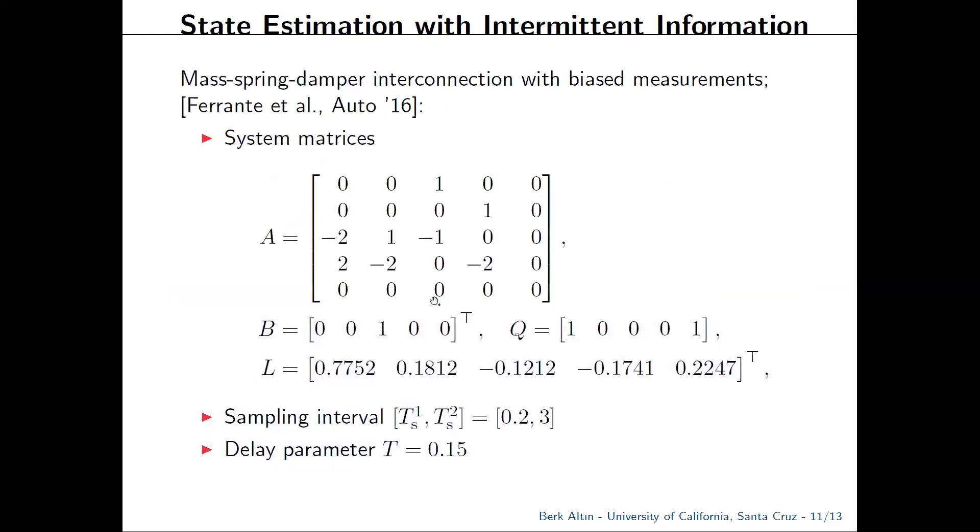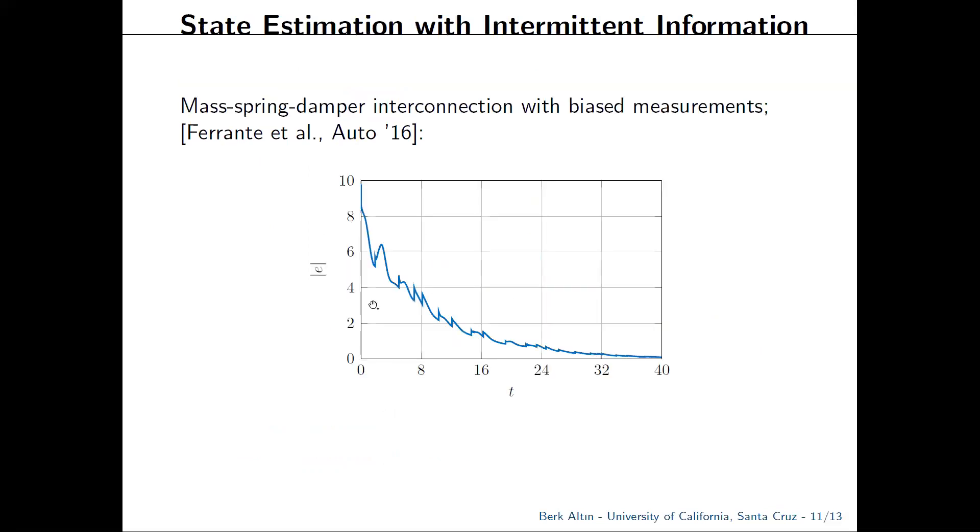We considered a simulation scenario where we have a mass spring damper interconnection with biased measurements. We added some delays into it. The lower bound on the sampling period is 0.2, and we chose a delay parameter of 0.15, which is rather high. But all in all, despite the loss of some monotonic behavior in the response which is expected due to the time varying and random delays, the estimation error converges to a neighborhood of zero and possibly to zero itself.